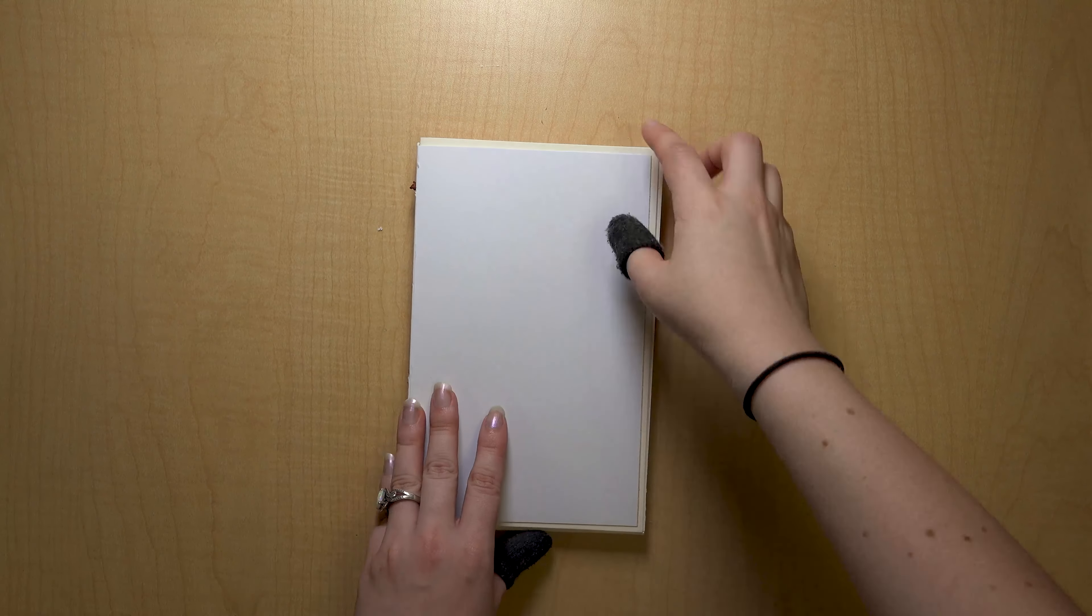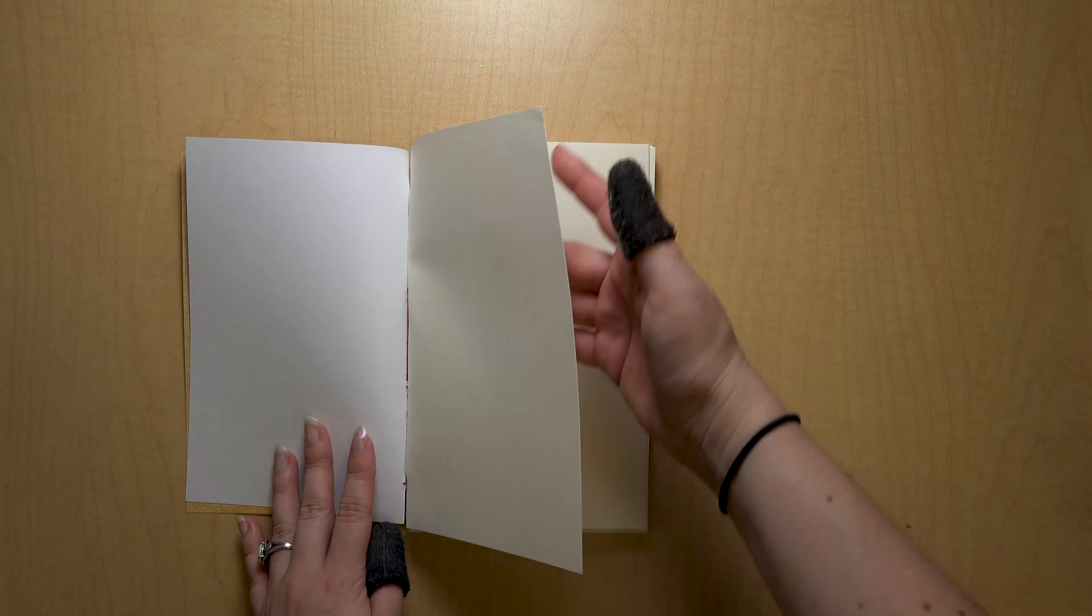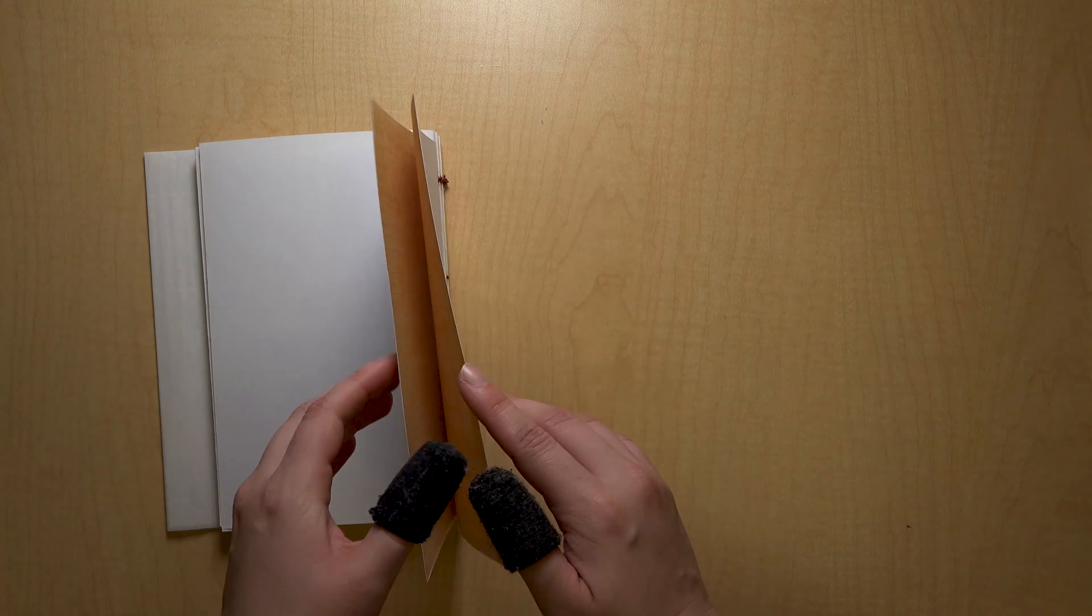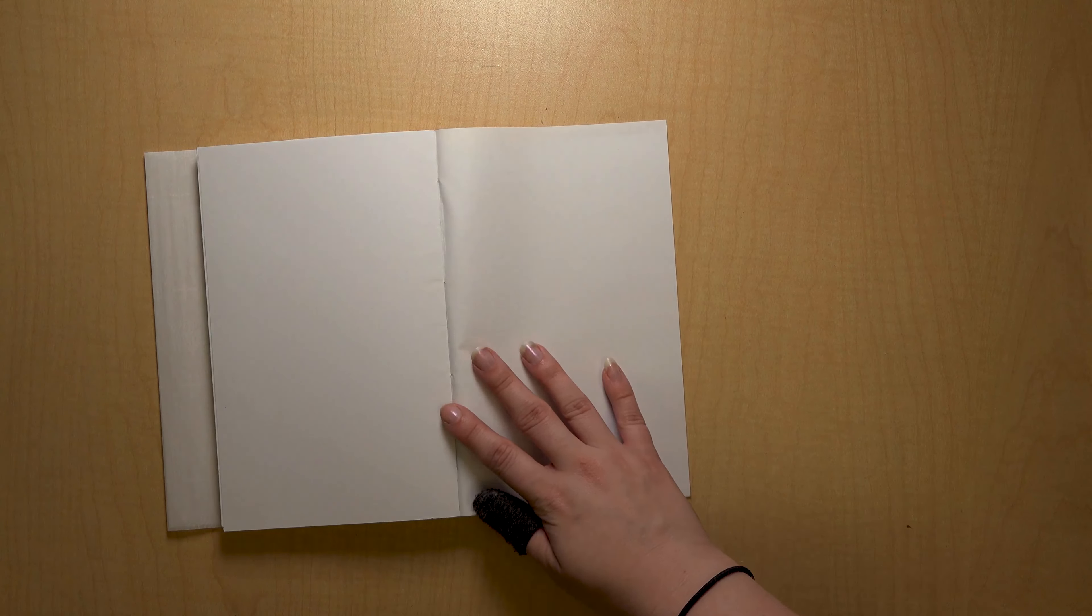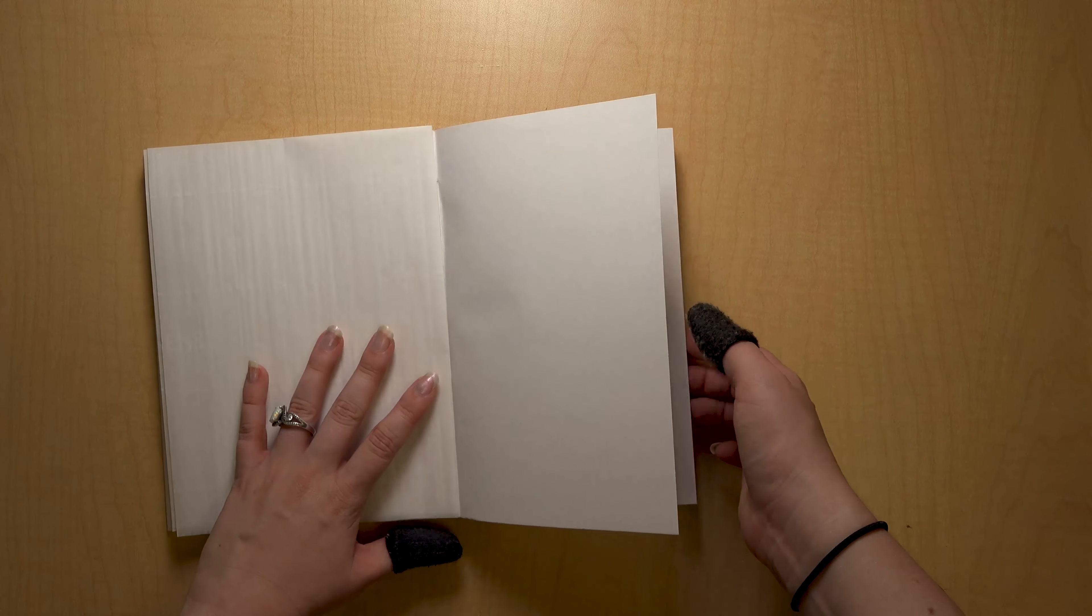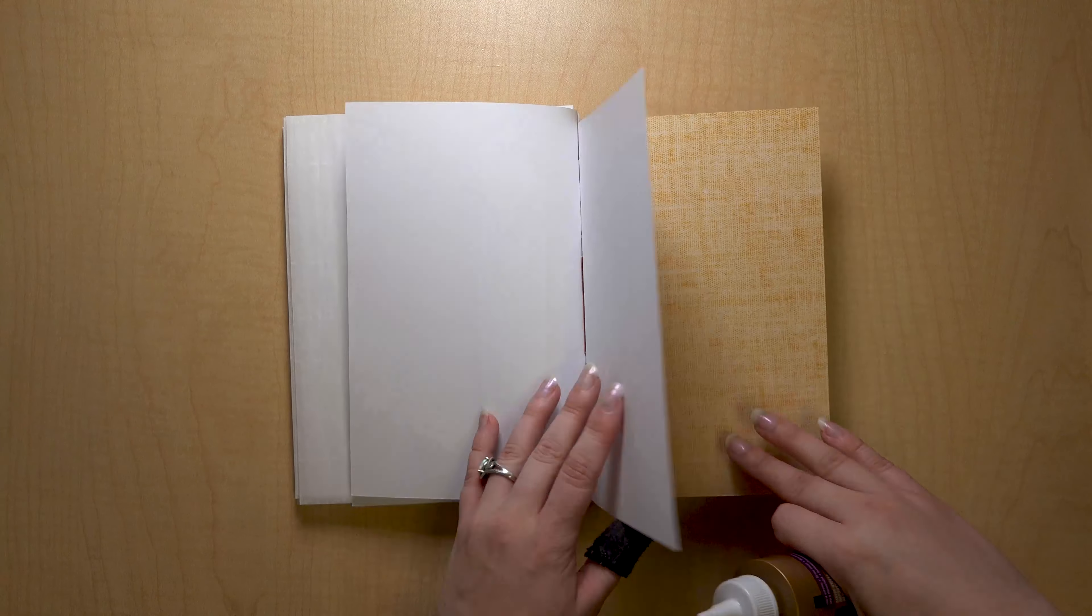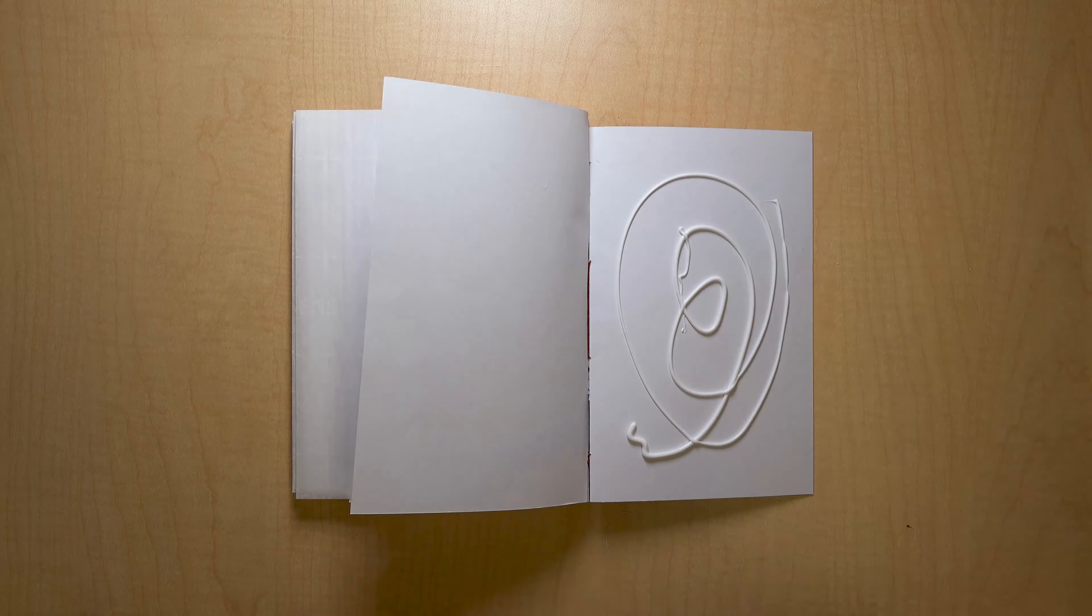We're almost done! Get your filler paper and let's put everything together. Put a little wax paper between the first two pages following the first end paper and the last two pages before the last end paper. Glue the end paper to the front of the first page and the back of the final page.